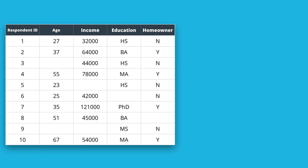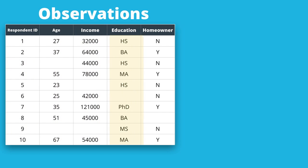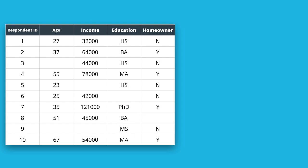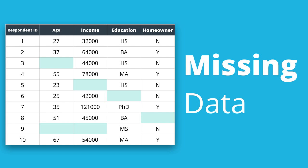Here we can see a very small data set that could have come from a survey. We can see where each record, also known in statistical speak as an observation, has a number assigned to the survey taker, as well as how they responded to various questions in the survey. For whatever reasons, some of the records or observations are missing some data.